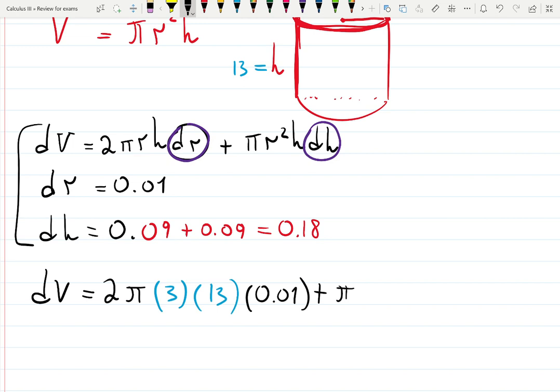π times r squared, r is 3 so 3 squared, and then... h isn't supposed to be here in the formula. That's a mistake because we're differentiating with respect to h, so that gives you 1, times dh which is 0.18.